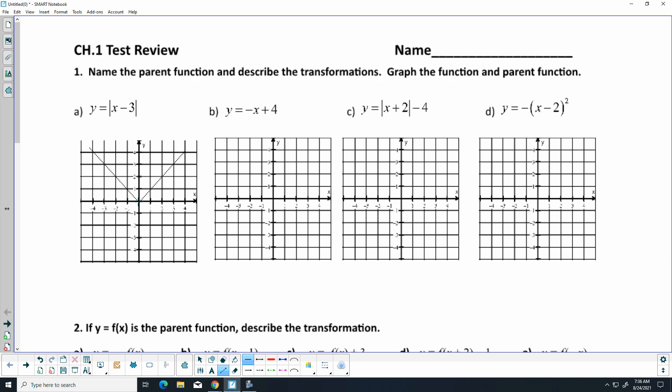So I'm taking that vertex, which is at 0, 0, and transforming it to the right 3, and that's what it would look like.